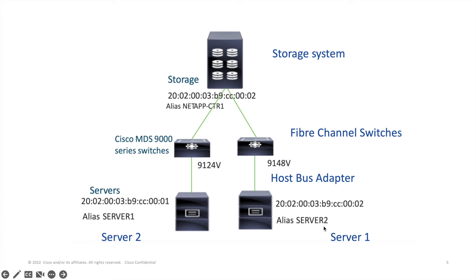You see here on server 1, it's got a Fibre Channel HBA — Host Bus Adapter. It's basically an equivalent of a NIC, or network interface card, that is connected with a Fibre Channel cable to a Fibre Channel switch, and then to the storage system which also has its Fibre Channel HBA. All of this together forms a Fibre Channel fabric.